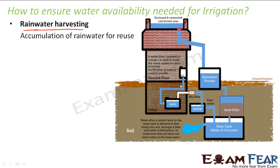Rainwater harvesting is a very good practice which can be implemented in every household, as it allows us to save a lot of water. During the rainy season when there is excess rain, we can store water for later use. Similarly for irrigation, rainwater is stored and used in other seasons when water is scarce. So we saw that irrigation, supported by adequate water supply, helps keep plants healthy and ensures good crop production.